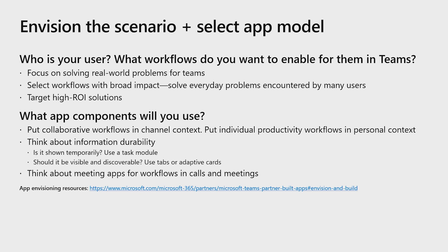Now that we know the basic construction of an app in Teams, we can get to the development process, which starts with envisioning. When you're deciding to build an app in Teams, start by defining the scope and the scenario that your app will cover. Ask yourself: who are the users I want to empower, and what workflows do I want to bring to Teams? Focus on solving real-world relevant problems. Think about broad impact for many users, and try to focus on solutions that have a high impact — you could try to reduce the mean time to resolution, or cut down the bug count.